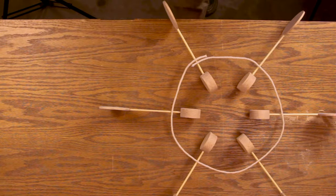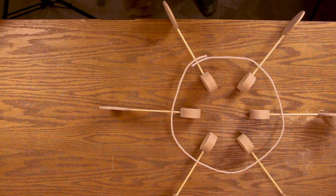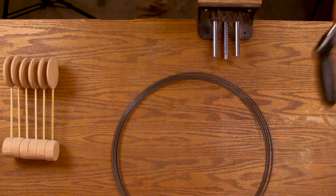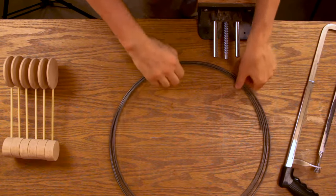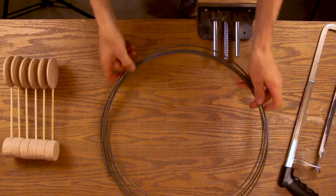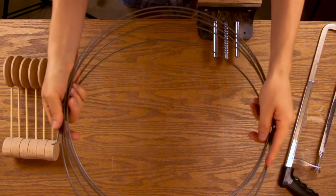So we'll go ahead and make a hoop. I've got this thick spring wire, also known as music wire. I think it's going to be perfect for making a hoop.